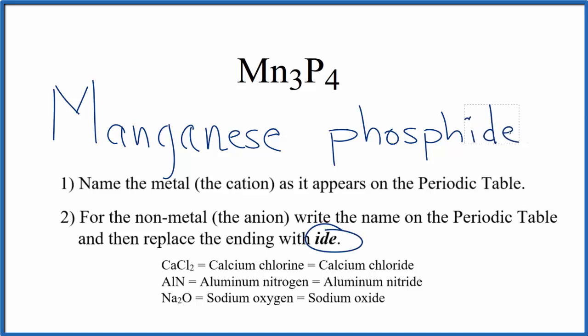And so far we have manganese phosphide as the name for Mn₃P₄. But manganese is a transition metal, so we need to write the charge in the name.